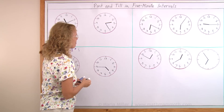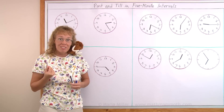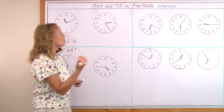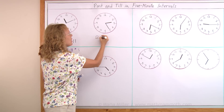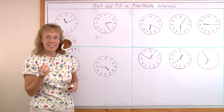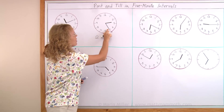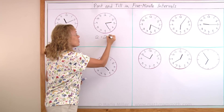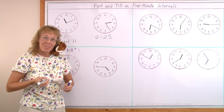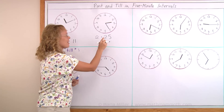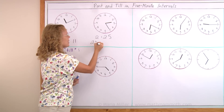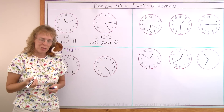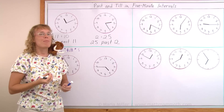Let's try another one. First write it the way we are used to. Look at the hour hand — it is past 2 o'clock, so 2 hours. Then the minutes: look at the minute hand and count by 5's — 5, 10, 15, 20, 25. So it's 2:25. The other way of saying it: we say the minutes first, how many minutes past the whole hour. 25 past 2, or 25 minutes past 2.